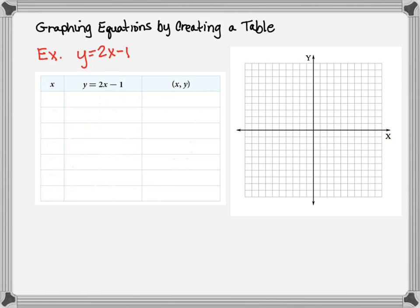We need to choose some x values. Usually I choose at least 3; here I'll choose a few more: negative 3, negative 2, negative 1, 0, 1, 2, 3. I'm going to substitute those values of x into the equation. So y equals 2 times negative 3 minus 1, which equals negative 7, forming the point (−3, −7).